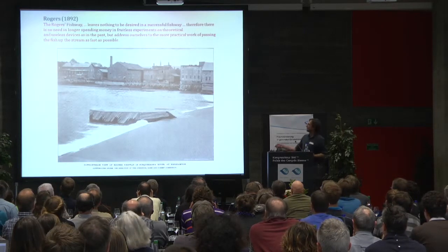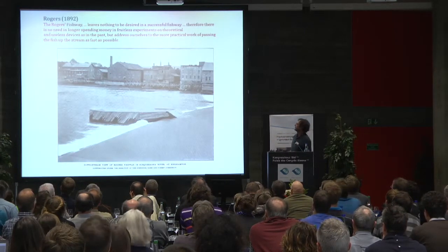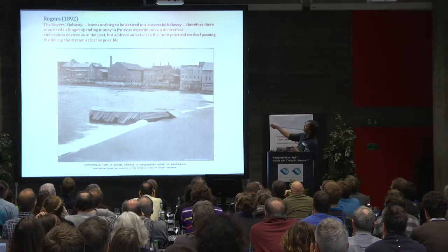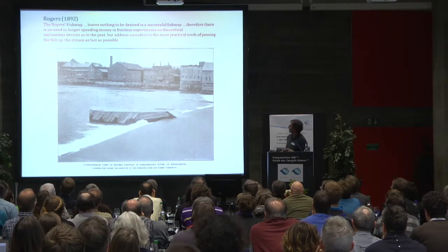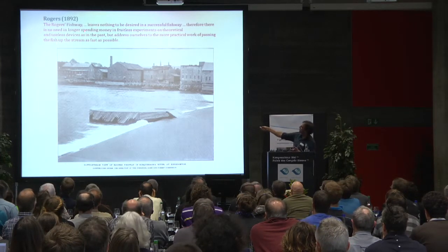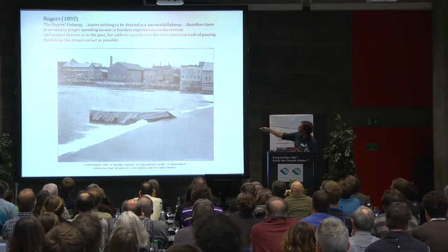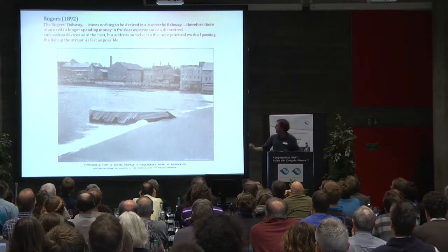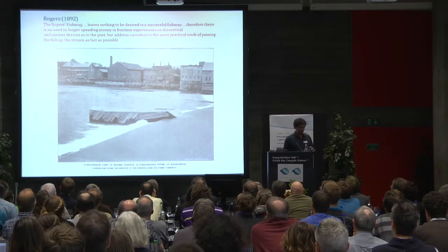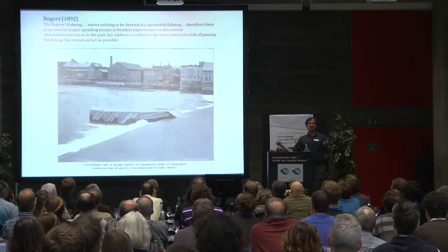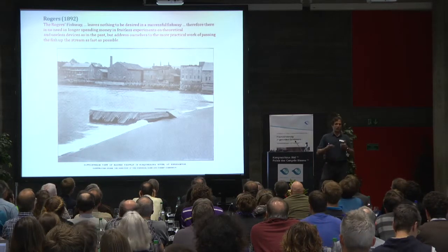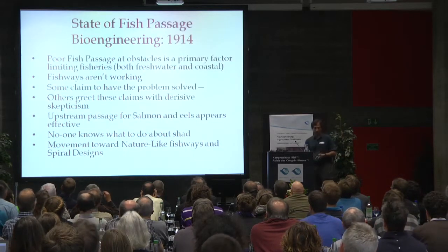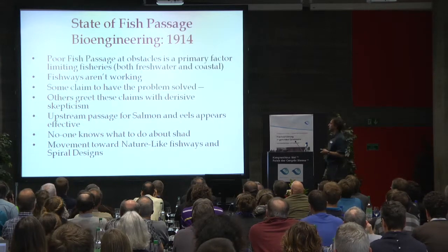Luckily, it was only 19 years later that we have Rogers, 1892, who solved it. His fishway 'leaves nothing to be desired in a successful fishway. Therefore, there is no need in longer spending money in fruitless experiments on theoretical and useless devices as in the past, but address ourselves to the more practical work of passing the fish up the stream as swiftly as possible.' So he solved it — 1892, fish passage was solved. No problem. We've got this nailed. We don't need to worry about theory or science. We can just build structures and know they'll work.